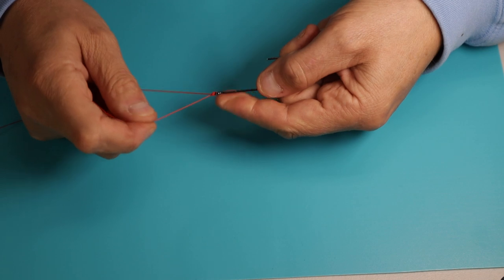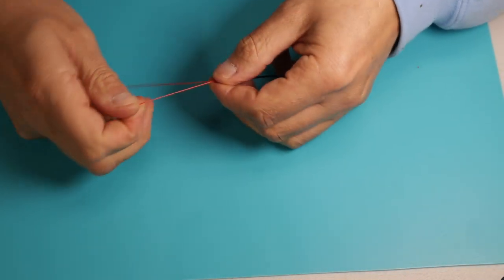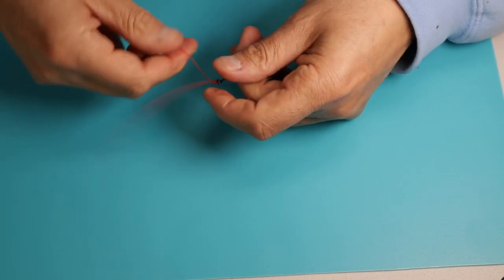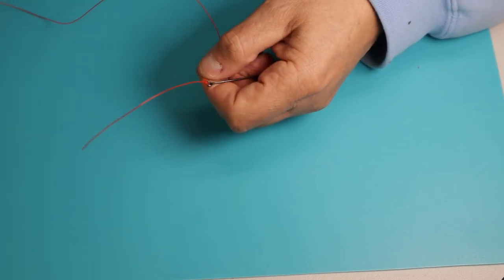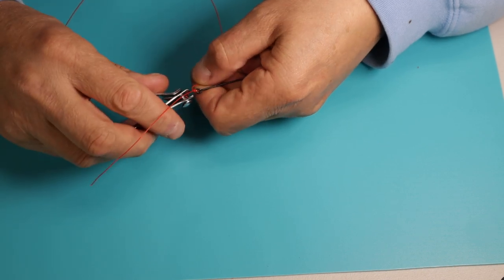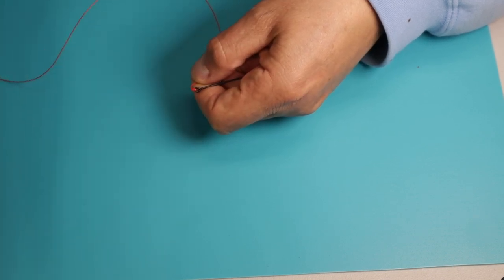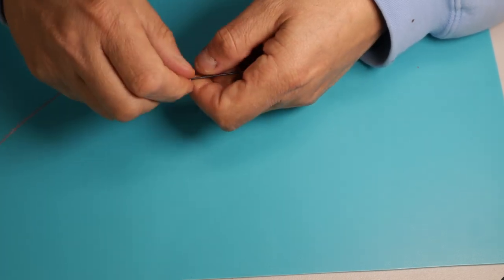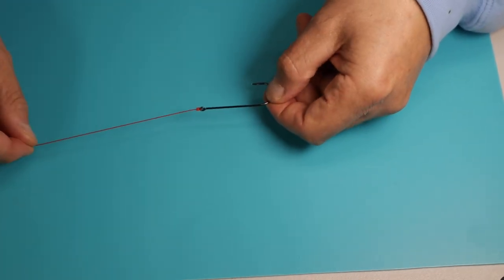One of the specific advantages of the uni knot is the fact that the tag end comes out parallel to the main line, and this can help with your bait presentation. When you cut the tags from this one, you cut them nice and short, and that is the uni knot.